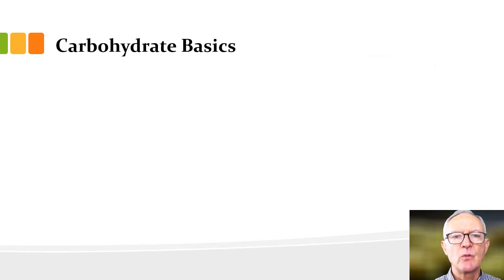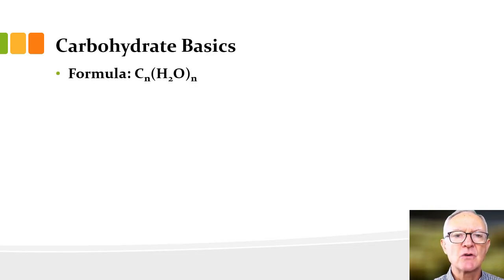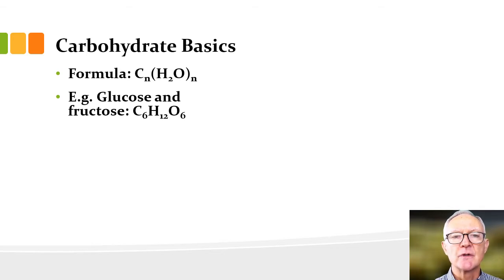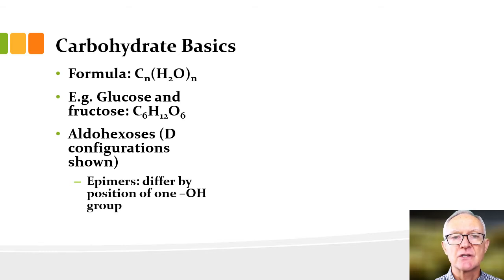So that is why we need to talk more about sugars — they're often conjugated to things in wine. Let's talk about carbohydrate basics. Carbohydrates are hydrated carbon: for every carbon, typically there is one water. In glucose, for example, there are six carbons and six waters, so the formula is C6H12O6. There are a whole bunch of six-carbon sugars, and we call those aldohexoses if they have an aldehyde group, or ketohexoses if they have a ketone group. In the case of glucose, it's an aldohexose.